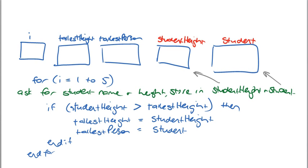Hi class. I'm just going to go over with you how we go through the comparison — finding the biggest or the smallest, or some sort of comparison between a group of records, a group of information. The example I've got here is how we'd find the tallest person out of a group of five students.